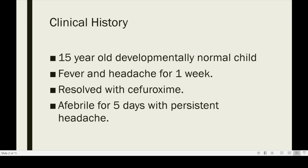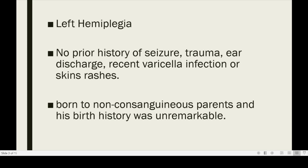This is a 15-year-old child who is developmentally normal, who had a history of fever and headache for one week. This resolved with cefuroxime, which was prescribed at the peripheral hospital. He remained afebrile for five days, although he had persistent headache. He presented with an acute onset left hemiplegia. There was no prior history of seizure, trauma, ear discharge, recent varicella infection, or skin rashes. He was born to non-consanguineous parents, and his birth history was unremarkable.